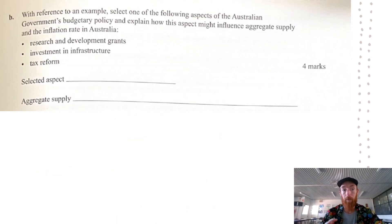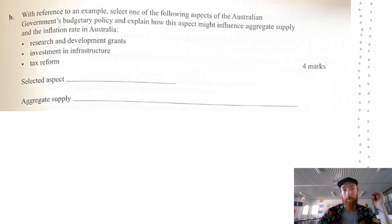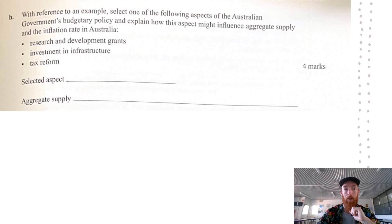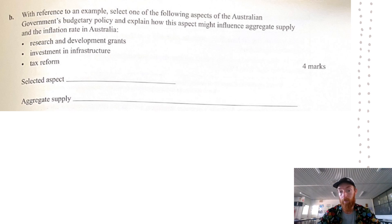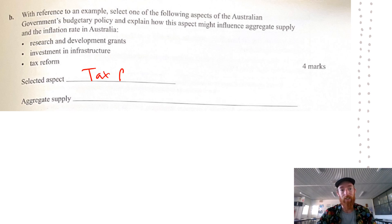Question 3b asks you to select one aspect of budgetary policy — research and development grants, investment in infrastructure, or tax reform — and explain how it might influence aggregate supply and the inflation rate. I always go with tax reform because it's quickest to link to anything, though you could talk about any of the others.